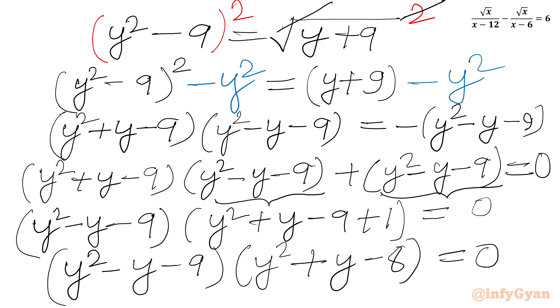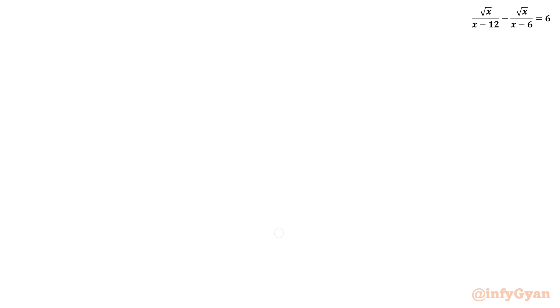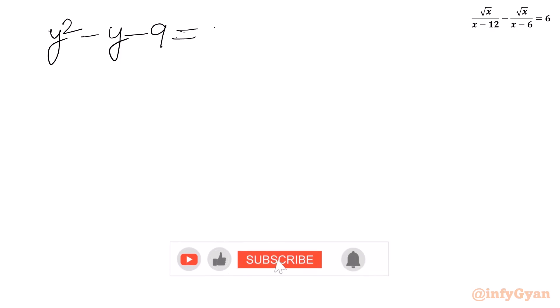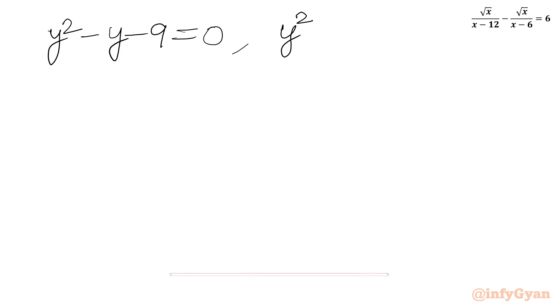From here we conclude two equations: the first is y squared minus y minus 9 equal to 0, and the second equation is y squared plus y minus 8 equal to 0.